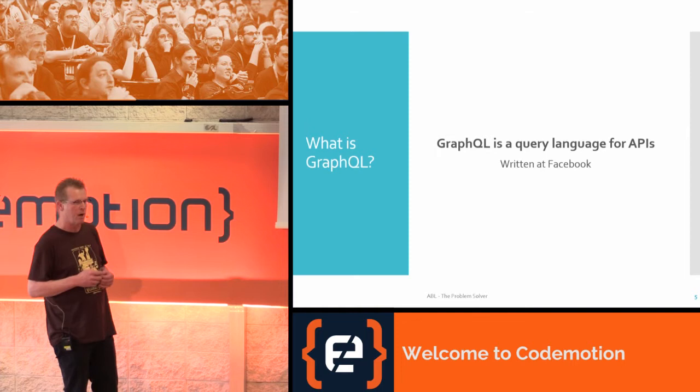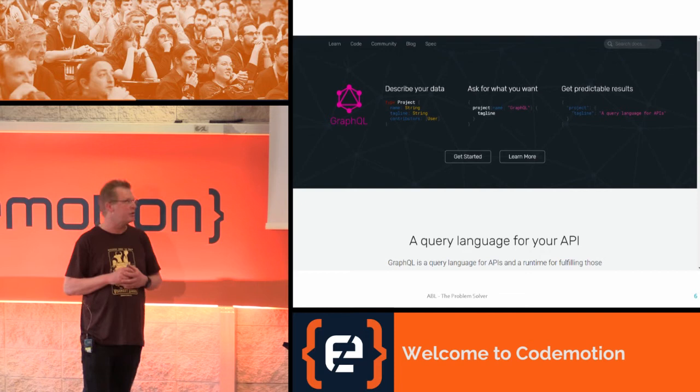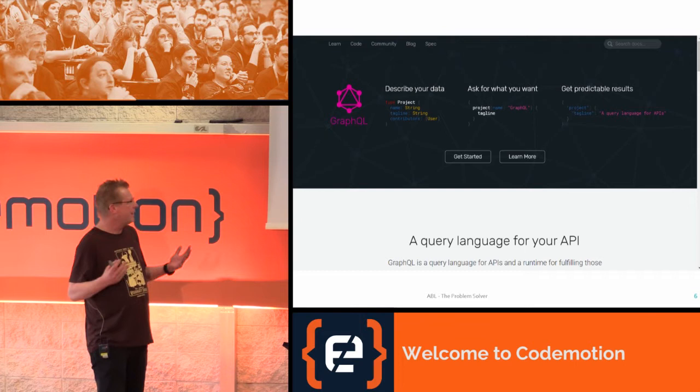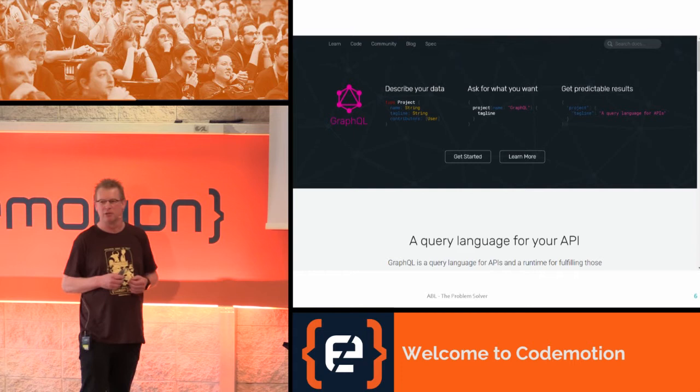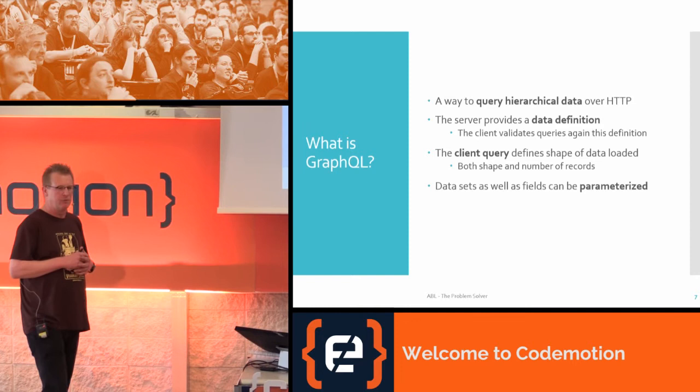If you go to the GraphQL website, you kind of get this: a query language for APIs. At the top you can see it describes your data — you describe your data, then you query your data and you get a predictable result, which is always nice. It can query all sorts of data, but typically it's around hierarchical data, but it's really kind of up to you.